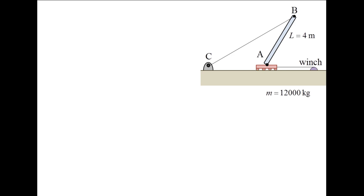The bottom of the slab rests on the dolly at point A. A cable connects the top of the slab at point B to the ground at point C. When the slab is raised 60 degrees relative to the horizontal, point A is 4 m from point C. Suddenly, the cable connected to the dolly breaks. At this instant, what is the acceleration of point A?